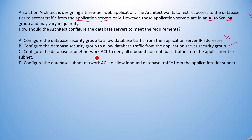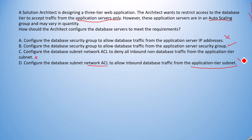The next option says: configure the database subnet network ACL to deny all inbound non-database traffic from the application tier subnet. The issue is that it's a three-tier application and NACL is stateless — unlike security groups, it can only allow or deny but cannot remember the reply for synchronized communication. This is not the correct answer. Option D is also based on network ACL to allow inbound traffic from the application tier subnet. I'll mark it as wrong because network ACL is stateless and should not be used here.